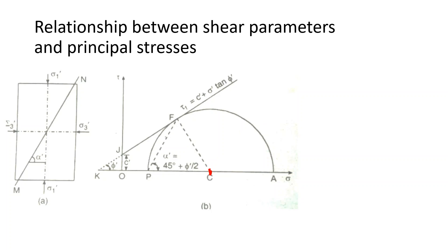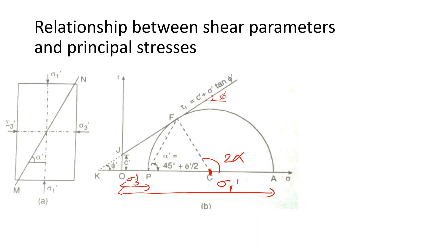We consider that OA is the major principle stress sigma 1 dash, and OB is the minor principle stress sigma 3 dash. The center lies between them. The maximum shear stress occurs at the top of the circle. The angle from the center is 2 times alpha. We consider the plane at angle alpha from horizontal — that is 2 alpha at the center. This line has a slope which is given by the angle of internal friction phi.